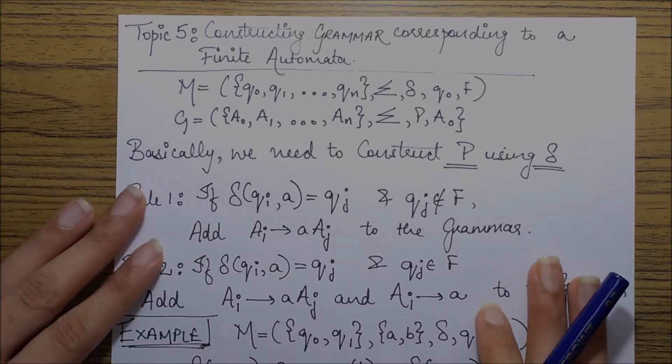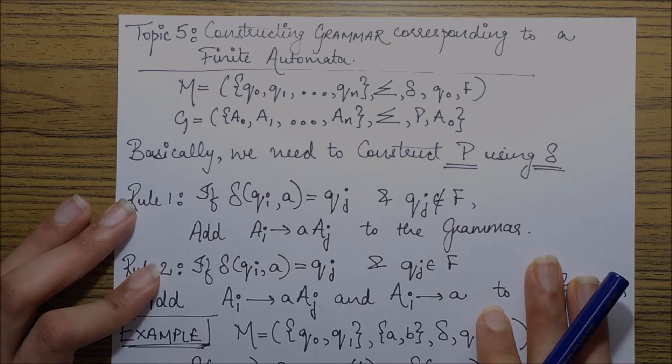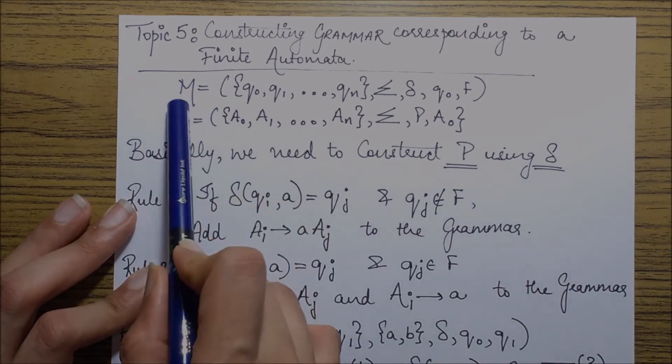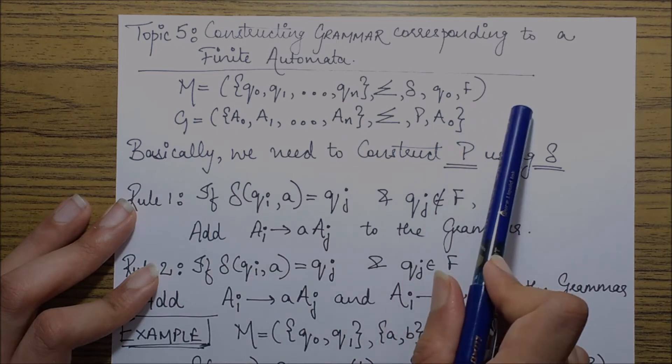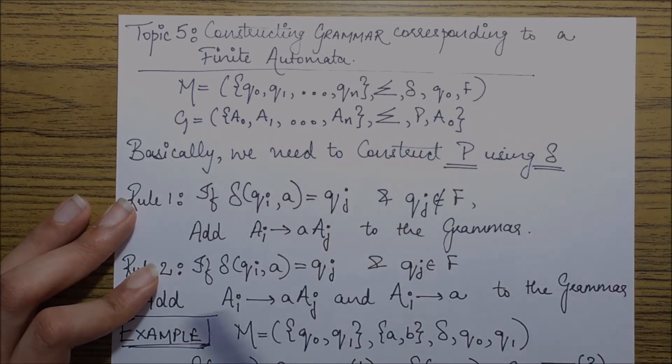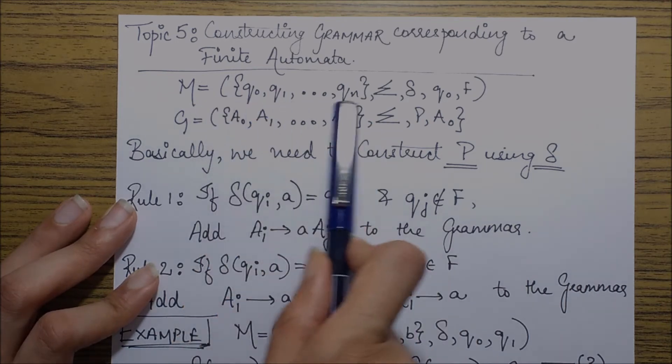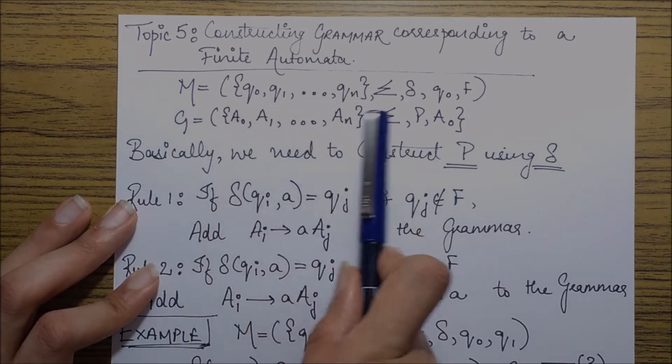If we see the representation of both, we already know that a machine termed as finite automata is represented as a tuple, a five-member tuple basically, which has a set of states q0, q1, and so on till qn.